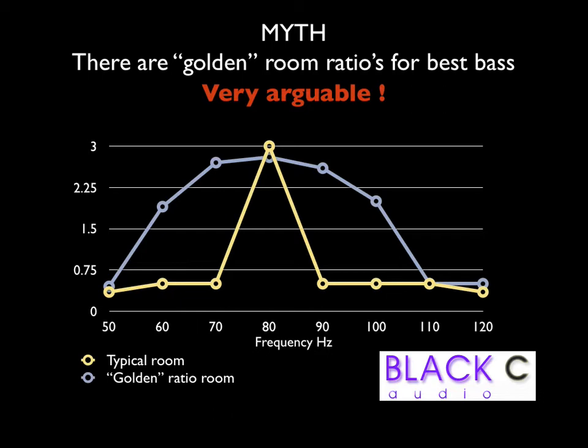On the other hand, if you forget about adjusting walls to gain a golden ratio and just live with the room you've got, you're likely to have an RT60 response like the yellow trace, which also has the advantage of being easier to correct since there's a smaller problem, a smaller target, easier to correct - and you don't have to build the room a particular size and shape. I rest my case.